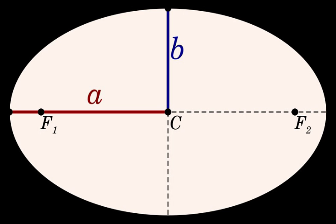The semi-minor axis b is related to the semi-major axis a through the eccentricity e and the semi-latus rectum l, as follows: b = a√(1 − e²), a = b²/l.